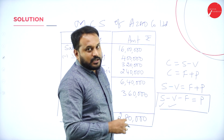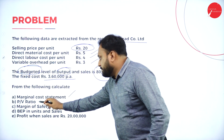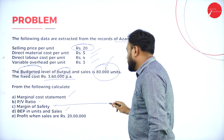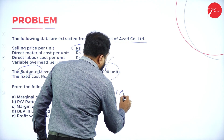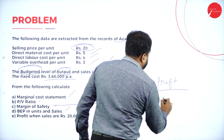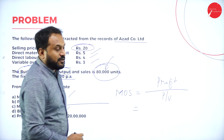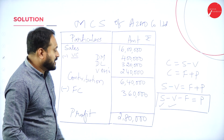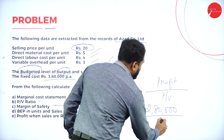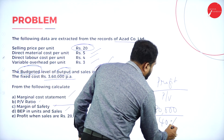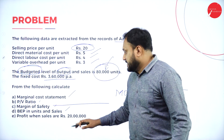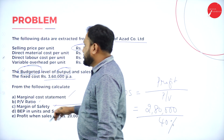PV ratio is done. Next is Margin of Safety (MOS). MOS = Profit / PV Ratio = ₹2,80,000 / 40%. Calculate this to get the Margin of Safety. Next we move to BEP in units and BEP in sales.